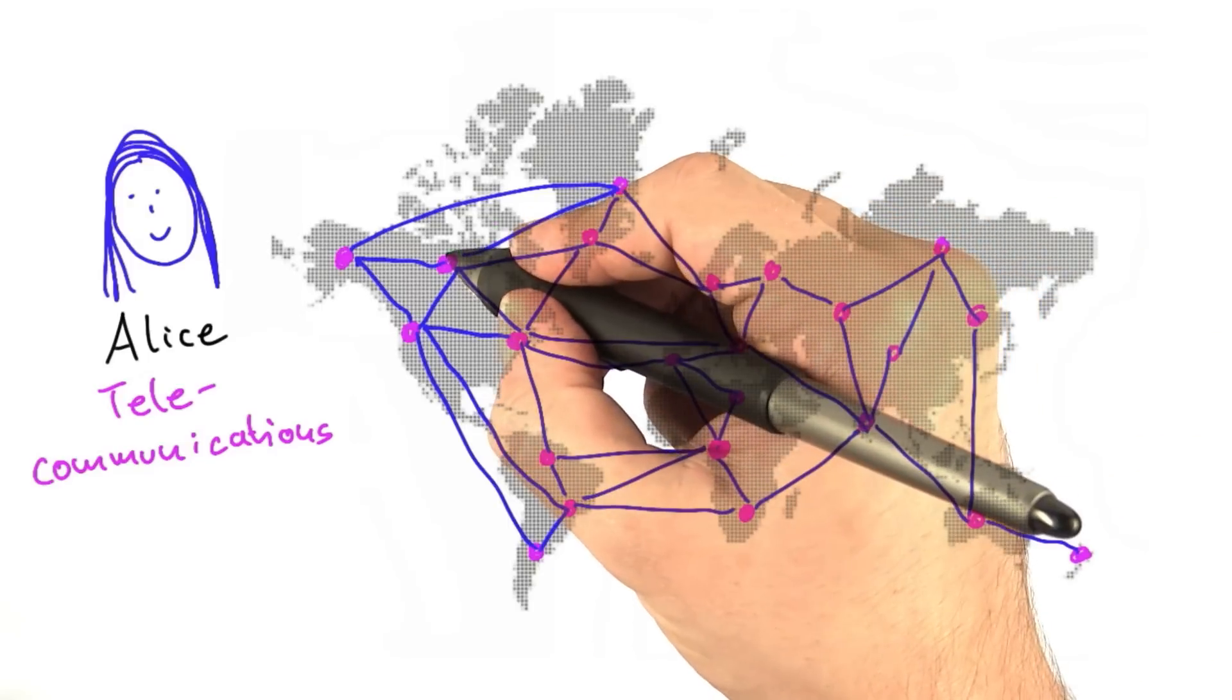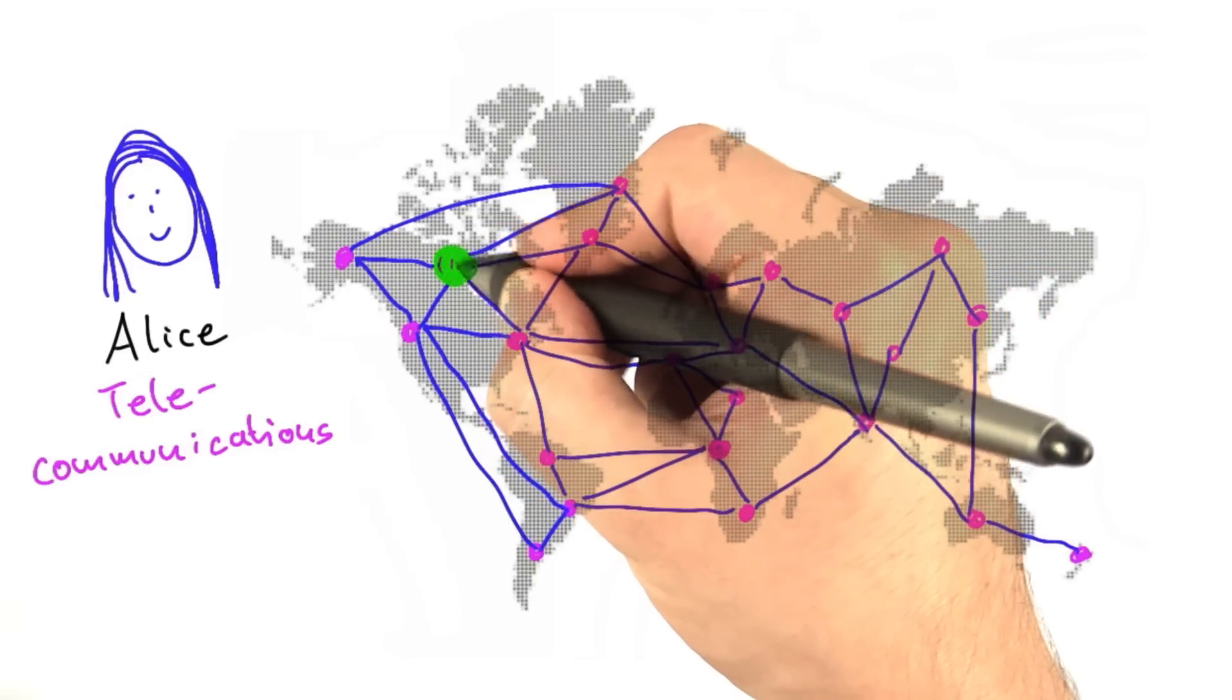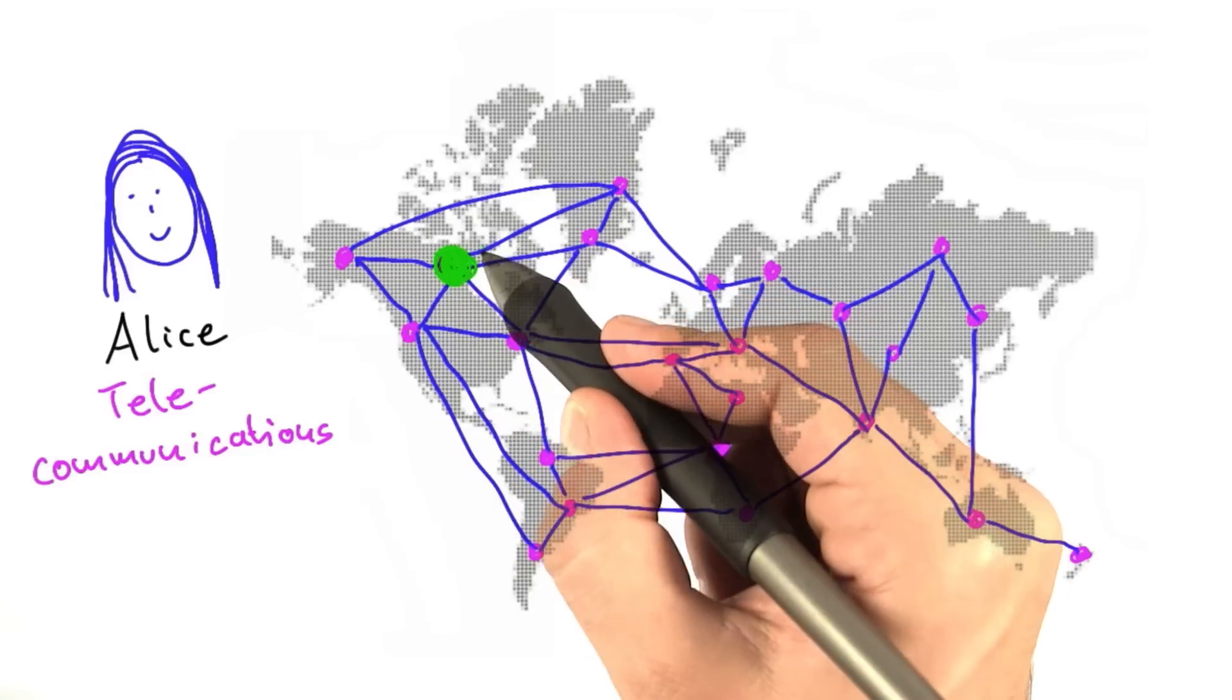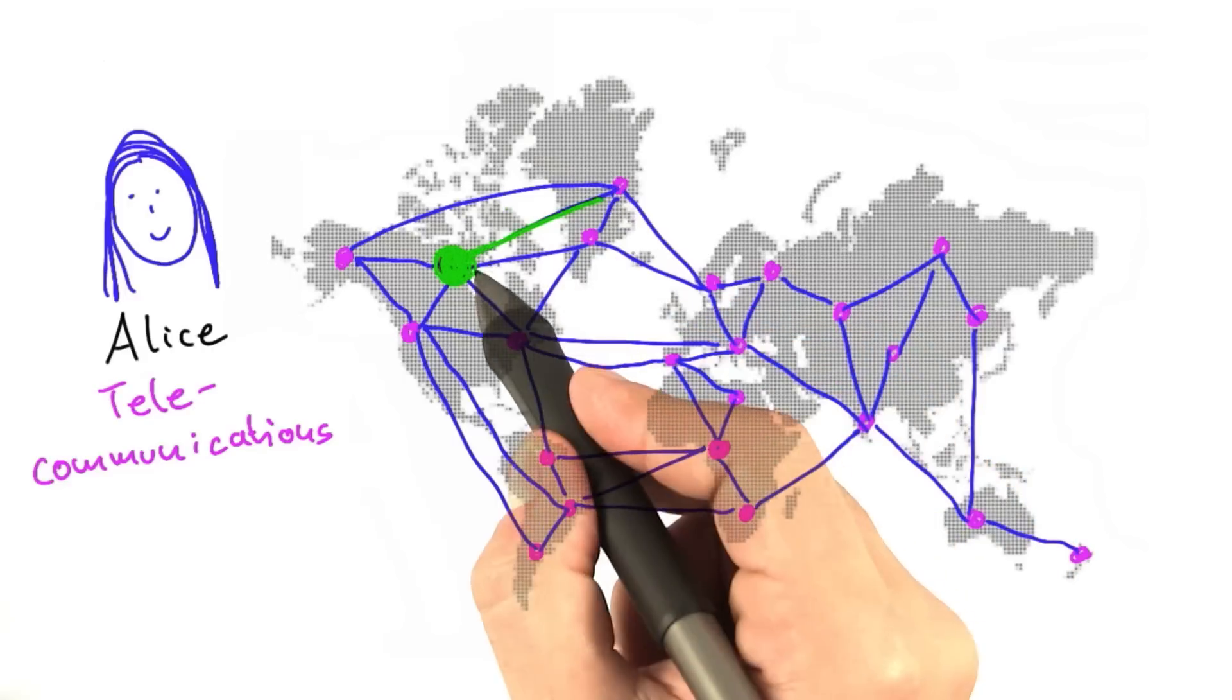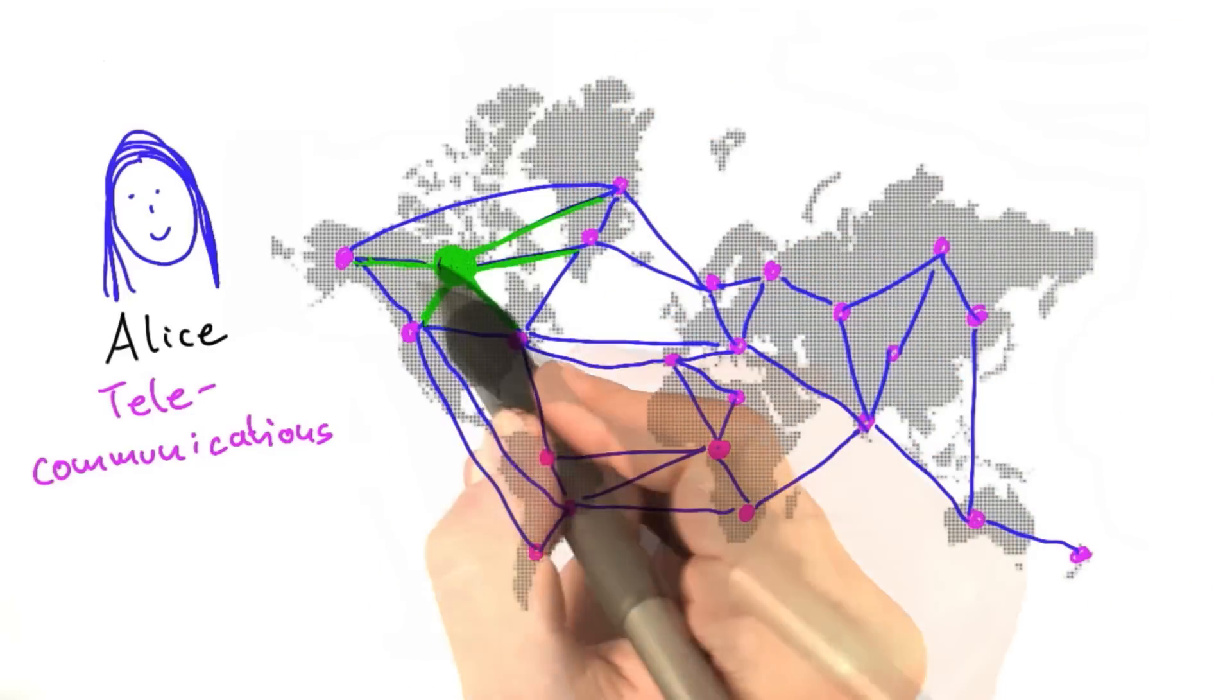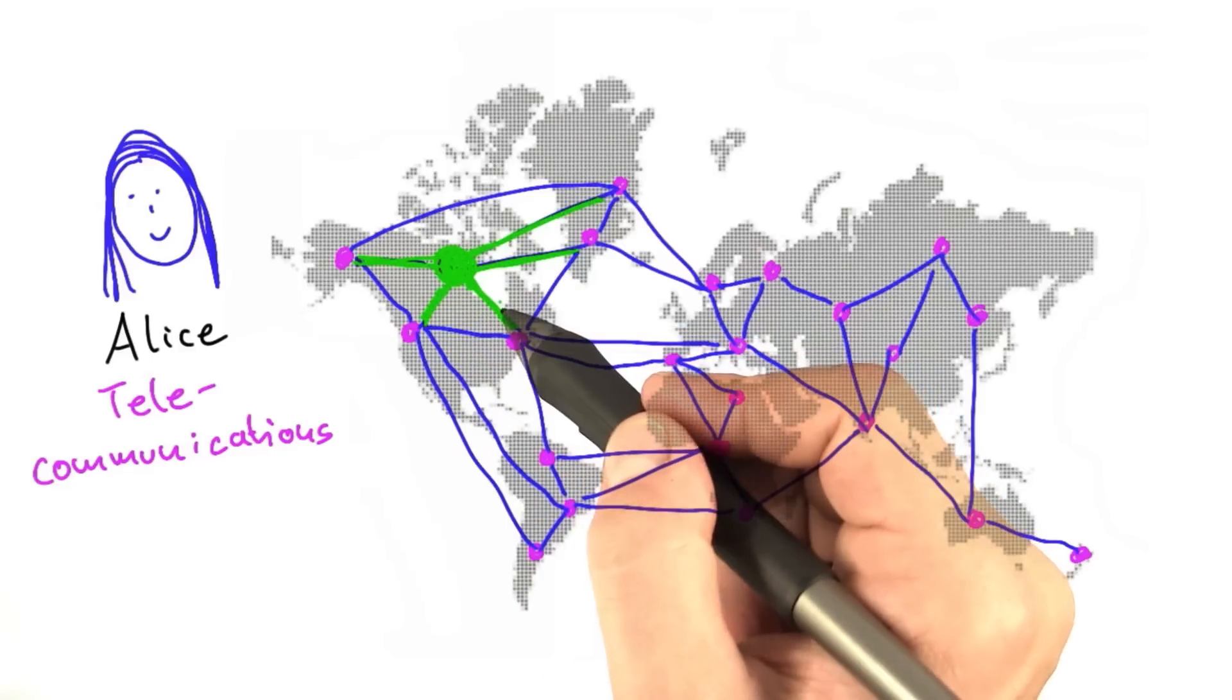To do this, her company can install monitoring devices, which I'm going to draw with a green circle. So the company could, for example, install a monitoring device here. What that monitoring device does is it checks the integrity of all cables that are connected to that communication center where you install the device. So installing a device here would allow you to monitor all these five cables that are drawn green here.